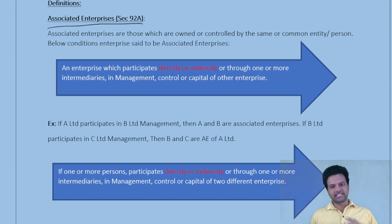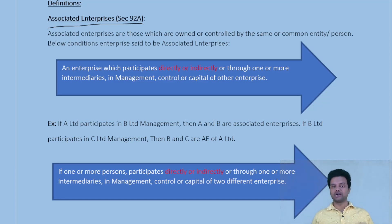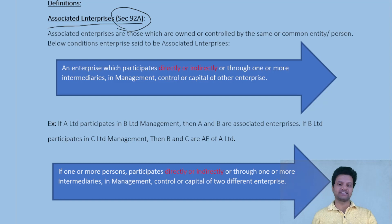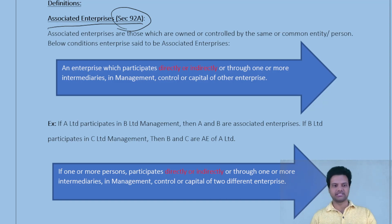We will move on to the next definition. The next definition is associated enterprise. Section 92A covers associated enterprises, while 92B is about international transactions.